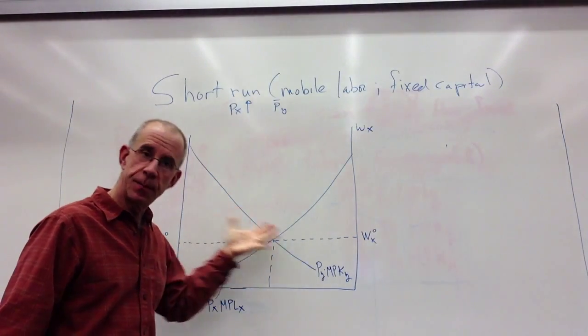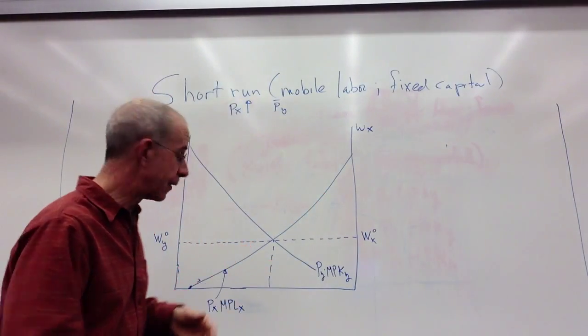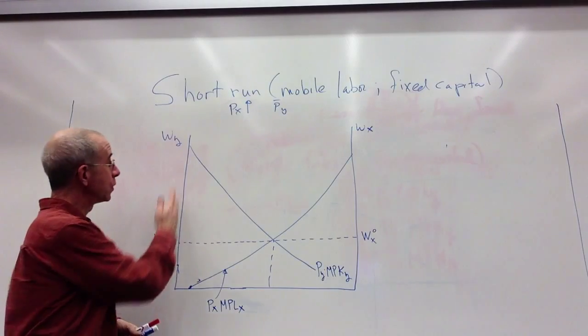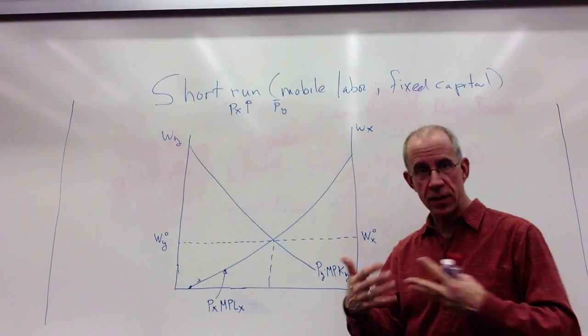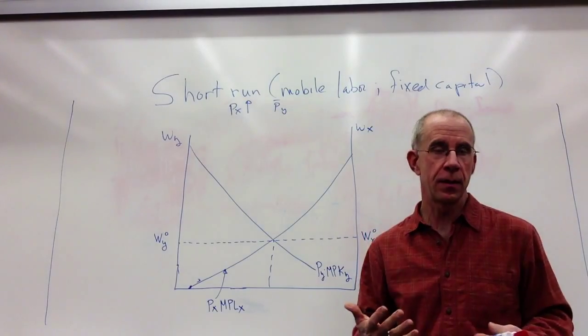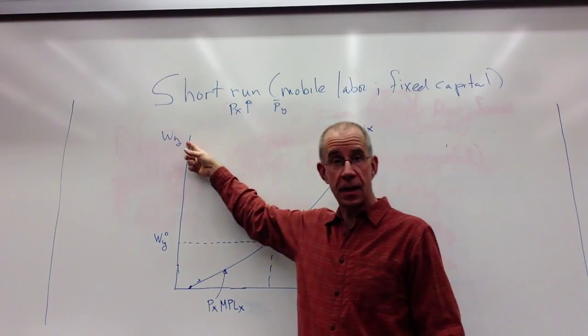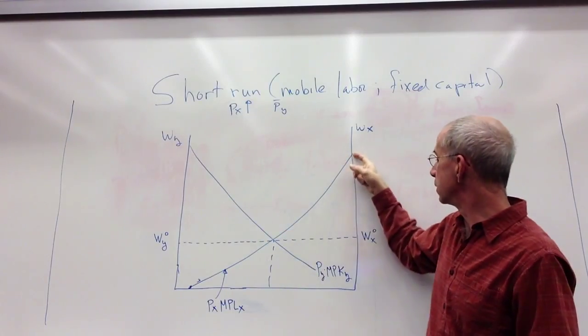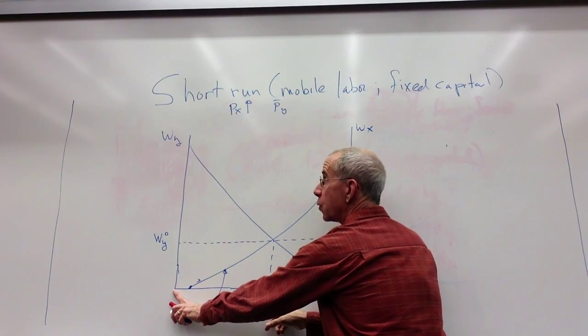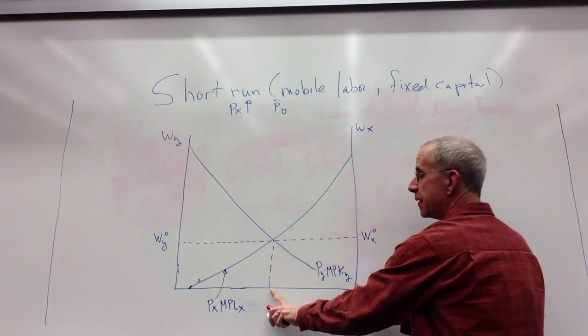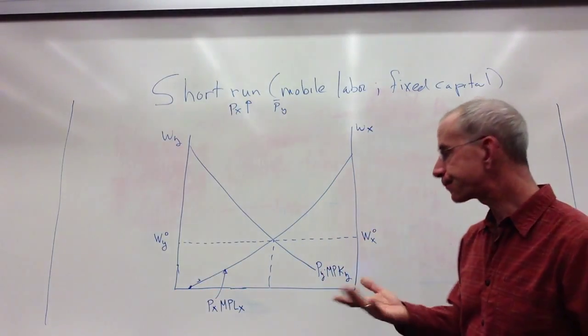So we've got the wage in Y, which is measured along this axis. This is the original wage in Y. This is the original wage in X. And we start out with the wage as equal because we're assuming that labor can move back and forth between the industries. This triangle is the payments to capital in Y. This triangle is the payments to capital in X. This distance is the number of workers employed in the Y sector. This is the number of workers employed in the X sector. And this horizontal axis is the total number of workers in the economy.